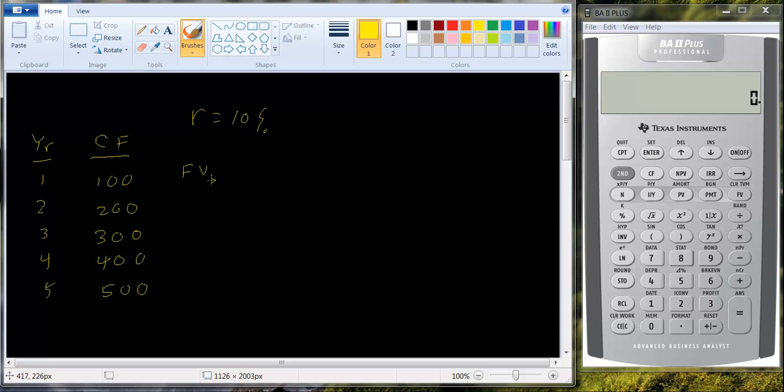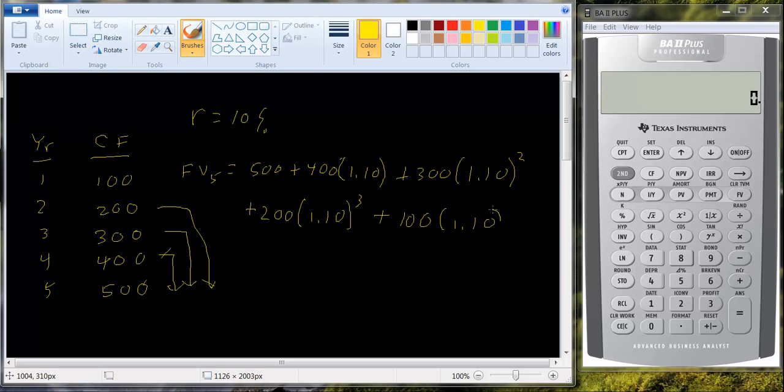Well, the future value in year 5 is going to be equal to 500, because it's already in year 5, plus 400 times 1.10, because we have to move this one period, plus 300 times 1.10 squared, because we have to move this two periods to bring it out to year 5, plus 200 times 1.10 cubed, because this has to go three periods, and then plus 100 times 1.10 to the fourth power, because this has to go five periods.